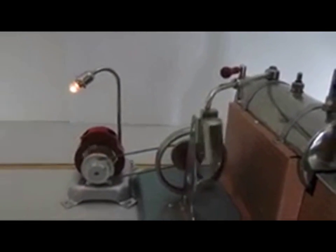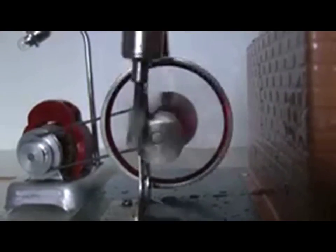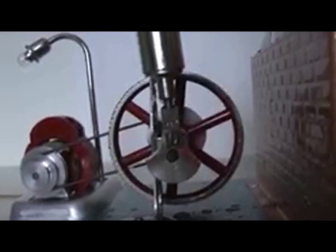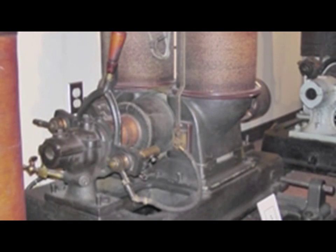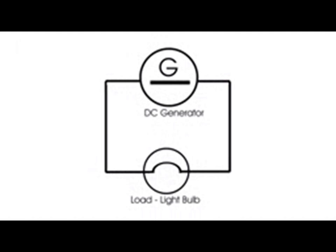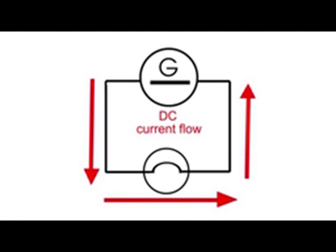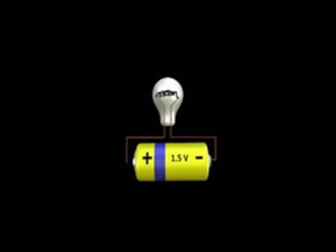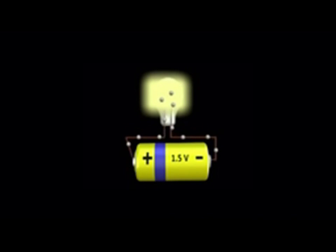Edison's generators produce DC, or direct current. This means that the current — a flow of charged particles, usually electrons — always travels in the same direction, from one terminal of the generator, through the load (in this case a lamp), to the other terminal. Battery cells also produce direct current; electrons flow from minus to plus.